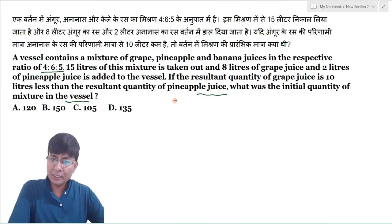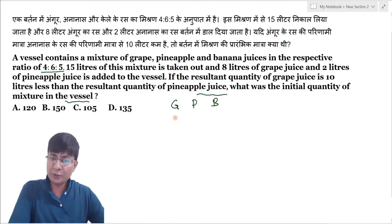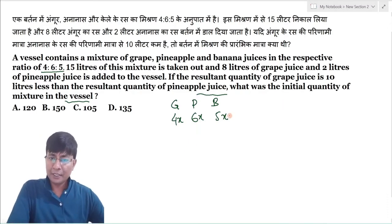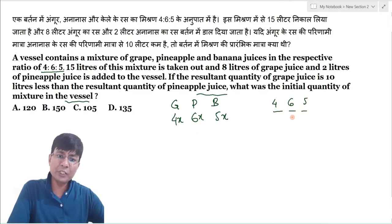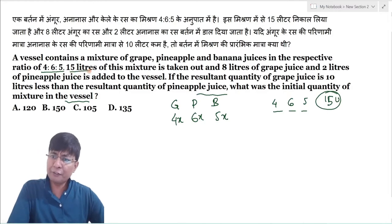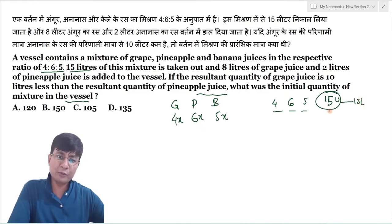देखो आपको given है mixture — grape का, pineapple का और banana का — और वो ratio कितना है: 4 is to 6 is to 5. अगर आपको नहीं बता तो simply assume कर लो 4x, 6x और 5x. Don't worry, बहुत complex calculation नहीं होगा इसमें. अब एक चीज़ ध्यान दो — यहाँ पर ratio 4:6:5 है तो total unit 4+6+5 = 15 unit है. Mixture में से आपने 15 liter mixture निकाला है तो 15 unit का value 15 liter है, तो 1 unit का value 1 liter हो जाएगा.